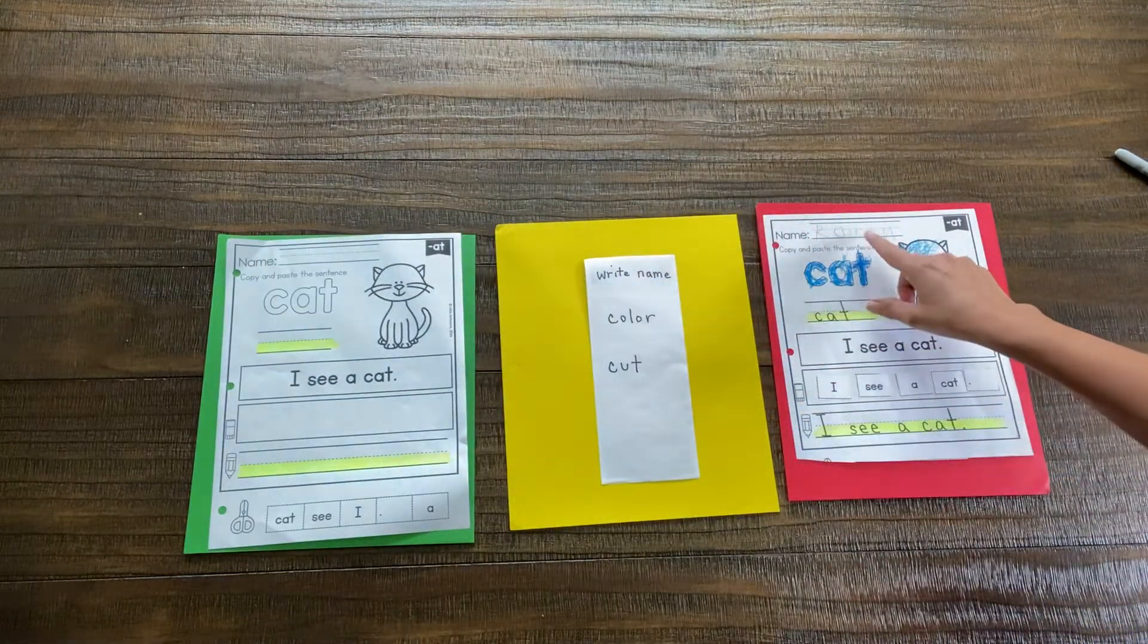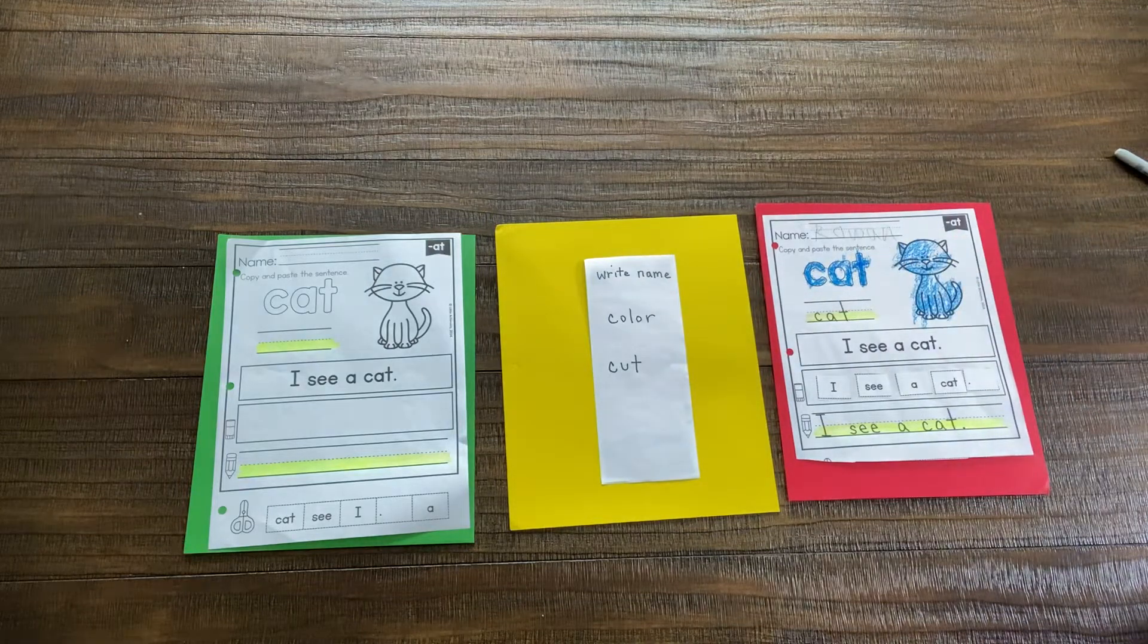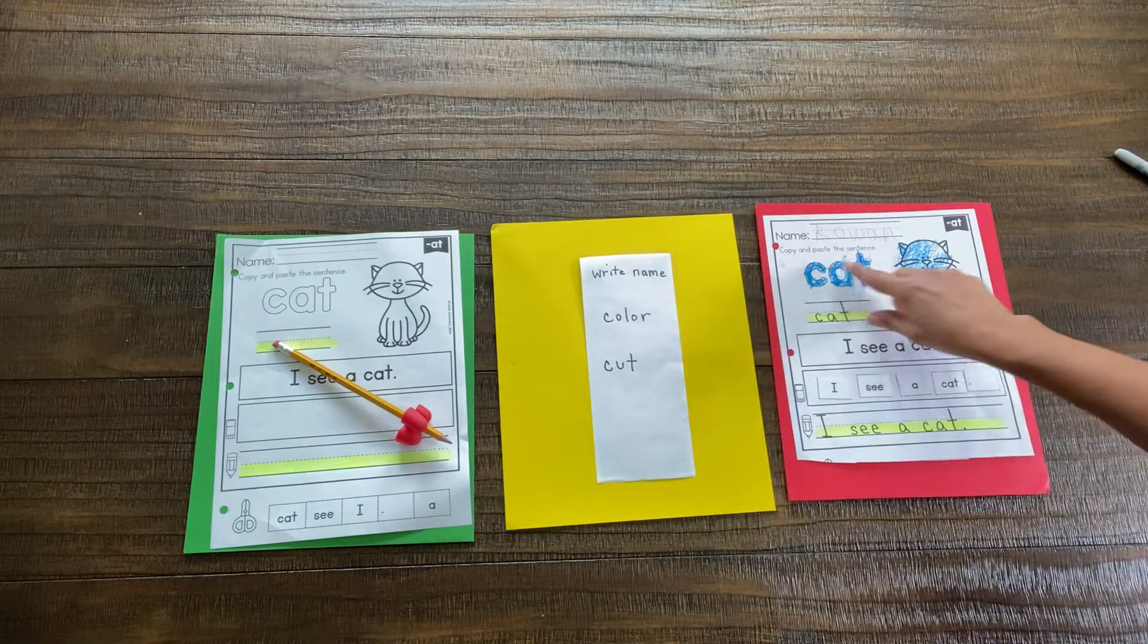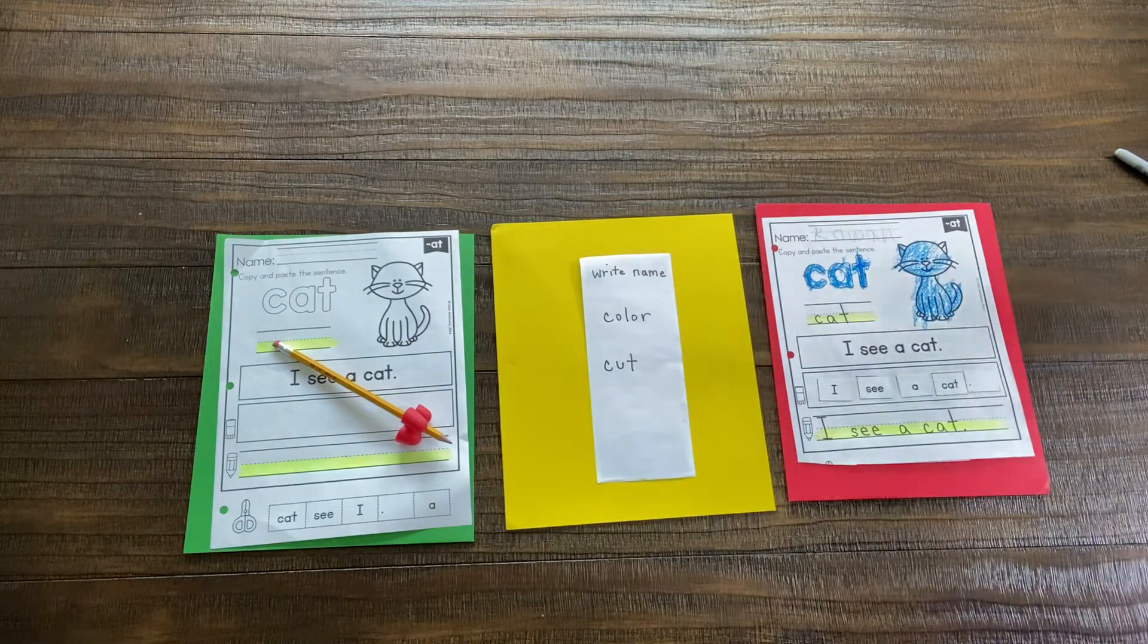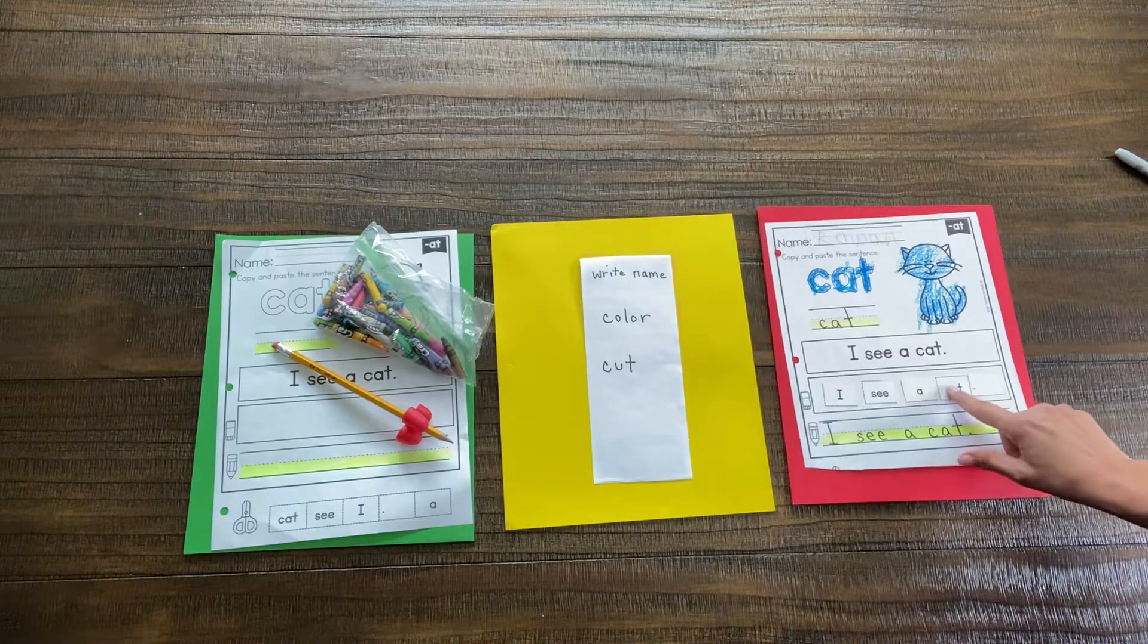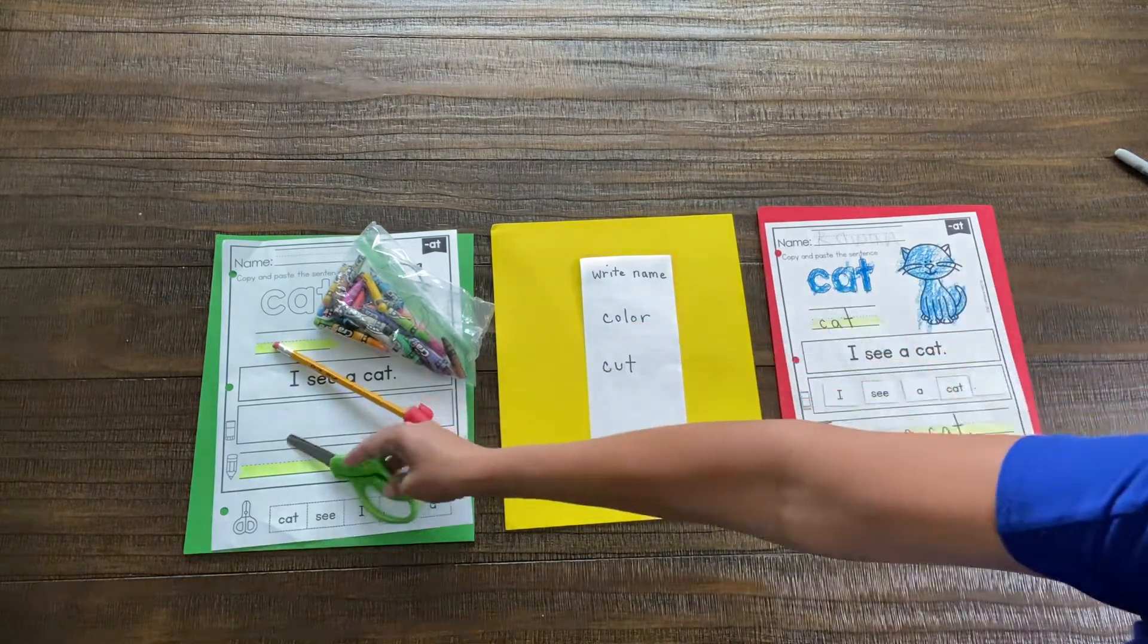We're going to have to write your name with what? With a pencil. Then what? We're going to have to color, so we need crayons. And the last thing that we're going to have to do here is cut, so we're going to need scissors.